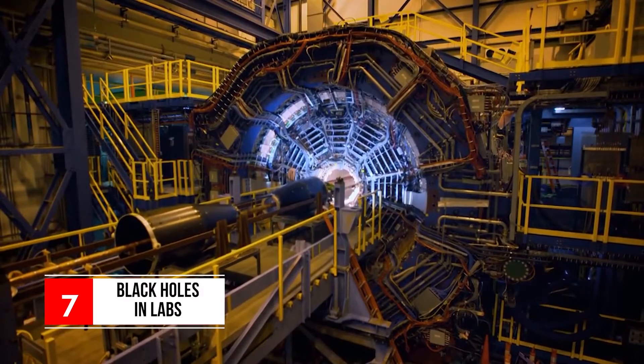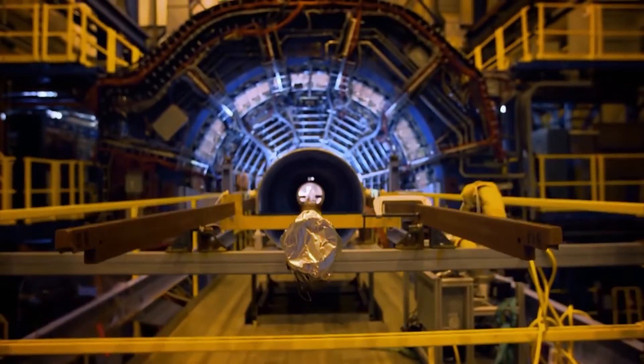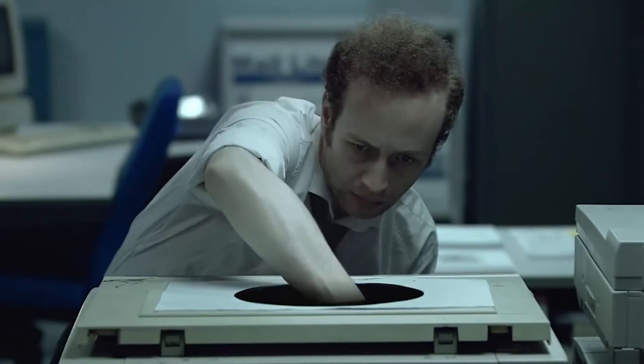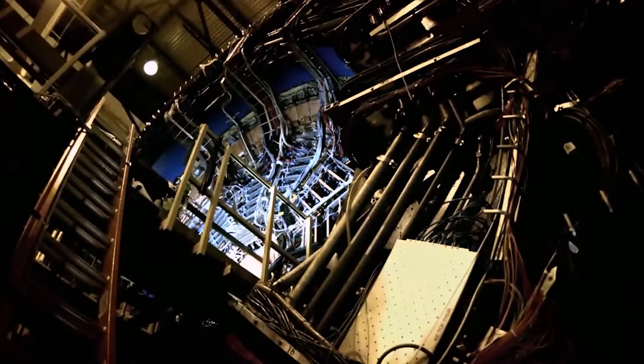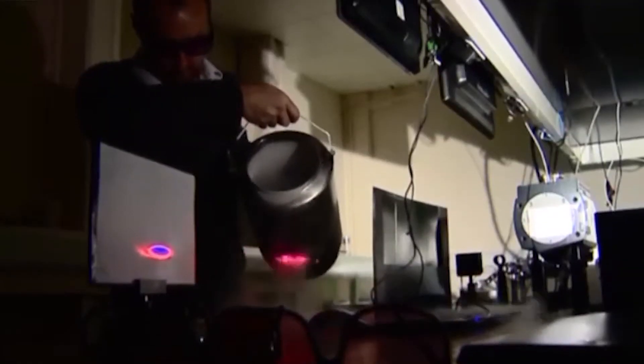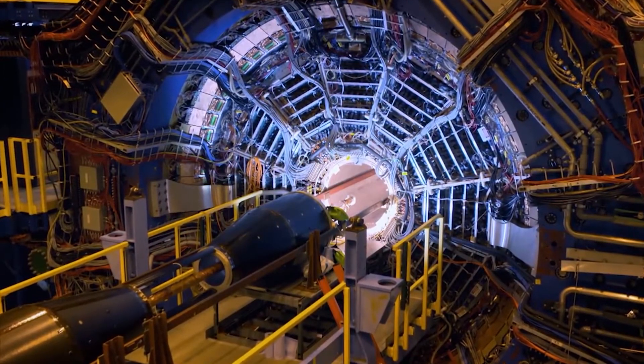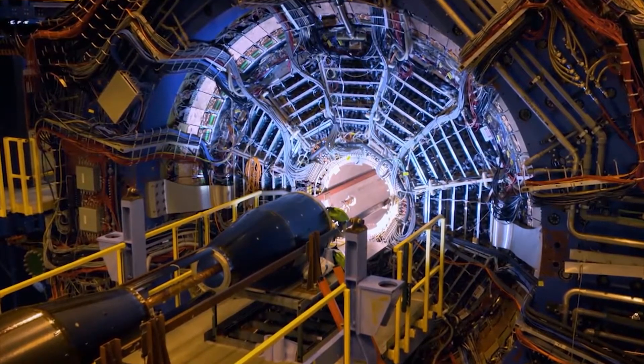Number 7: Black holes in labs. Black holes have been a staple of popular fiction for a long time, yet making an artificial one has never been possible. At least not until researchers from Southeast University of Nanjing, China figured out a way to approximately mimic a black hole in the lab. They created a circuit with a kind of material used to change the passage of electromagnetic waves.